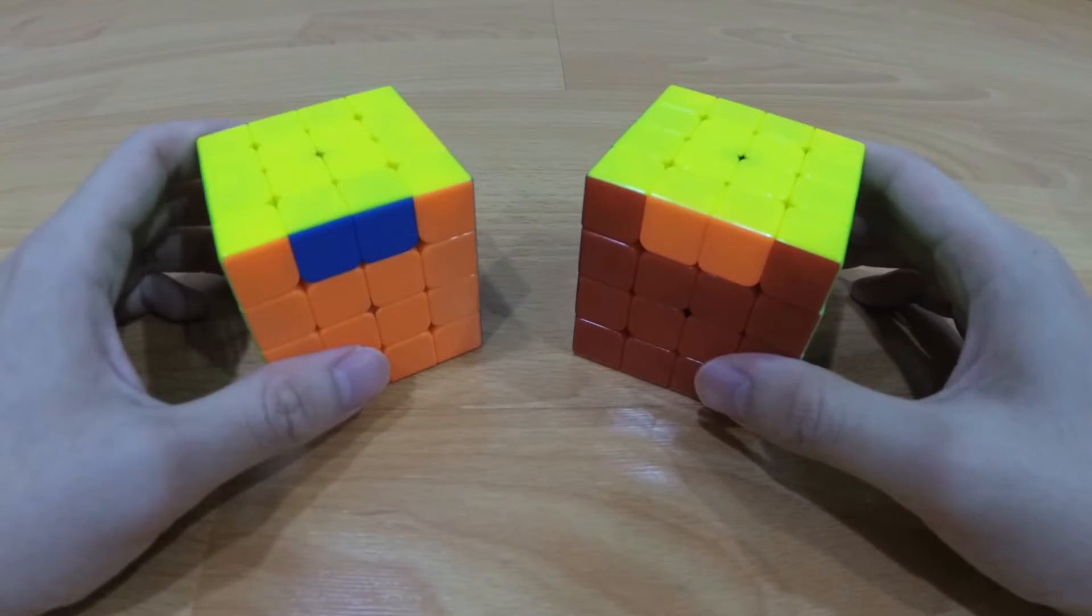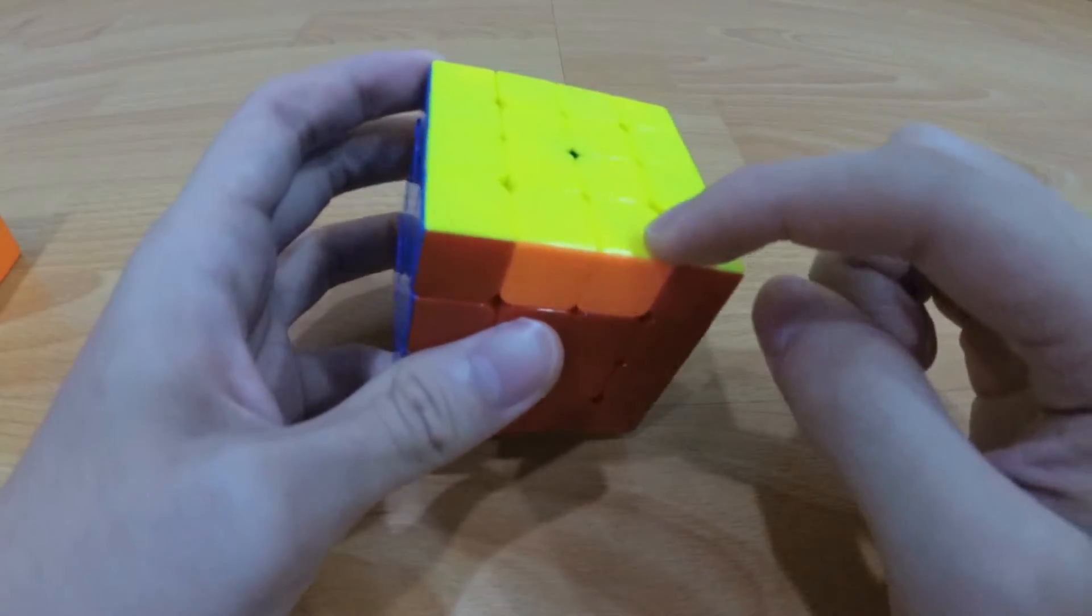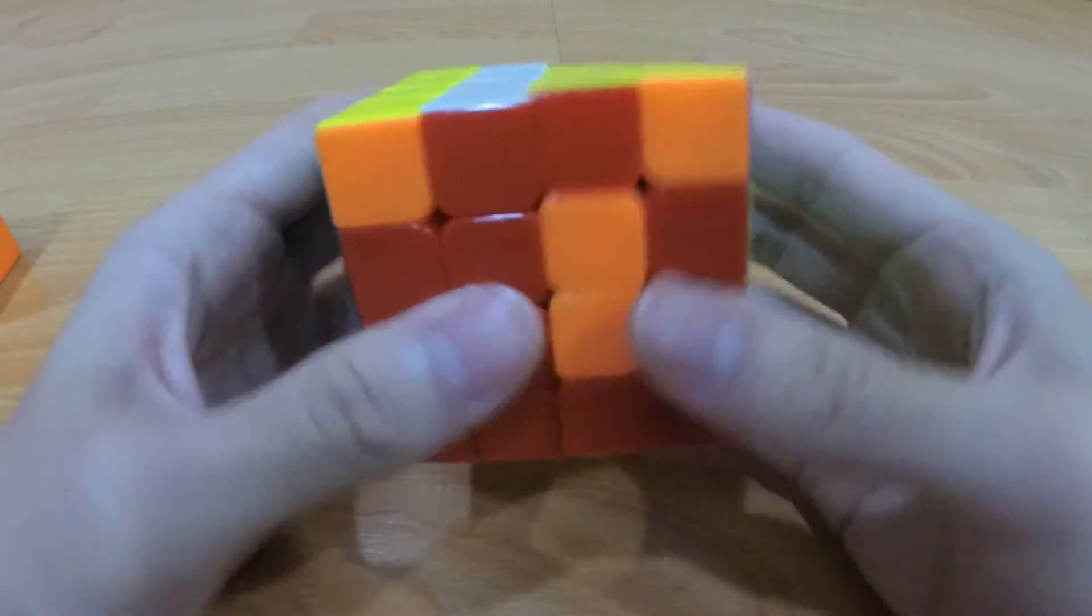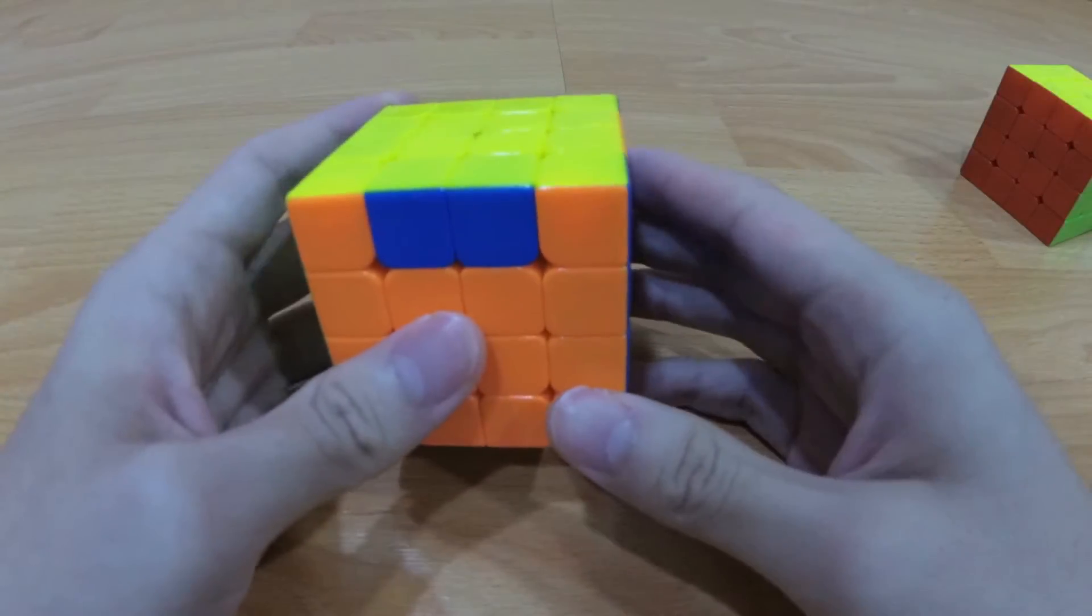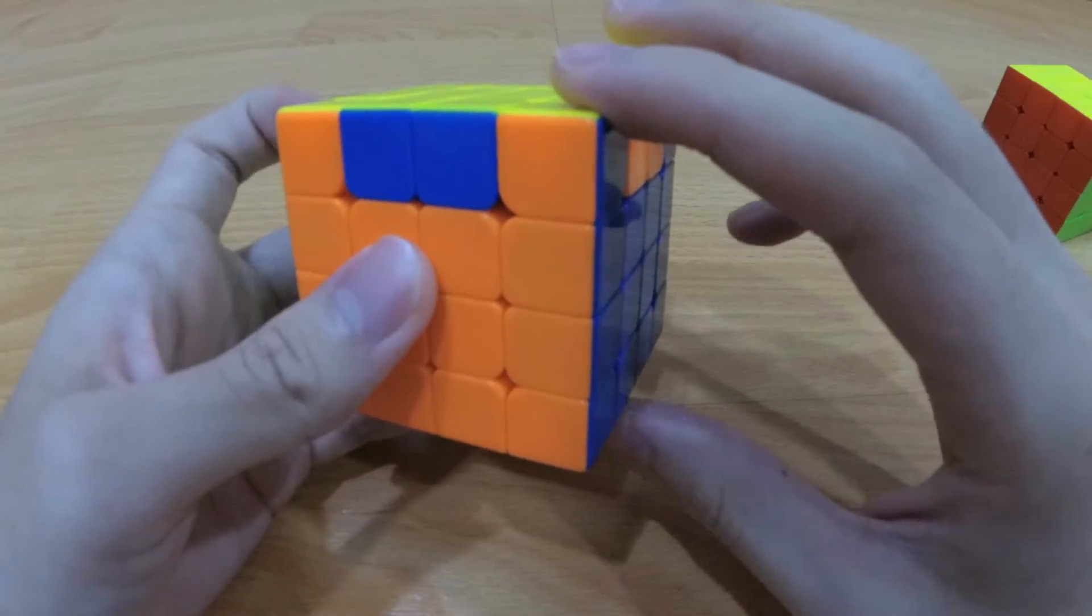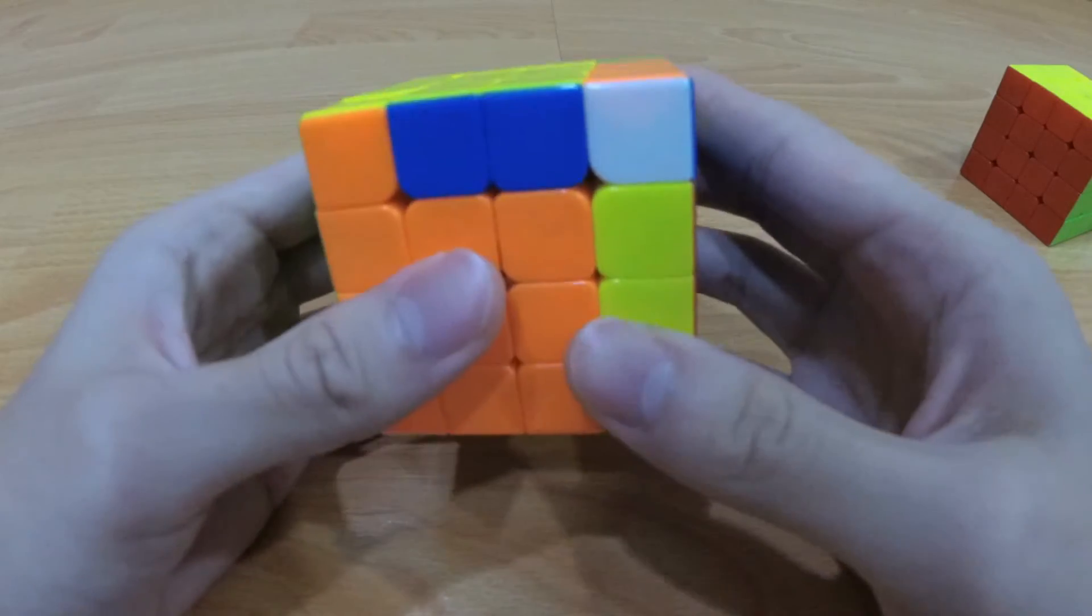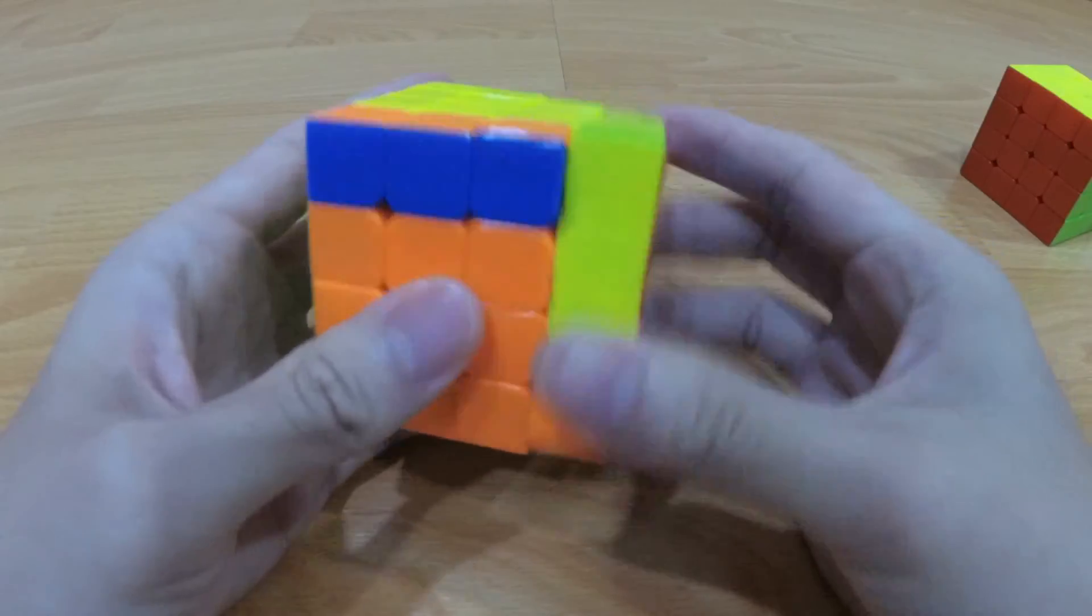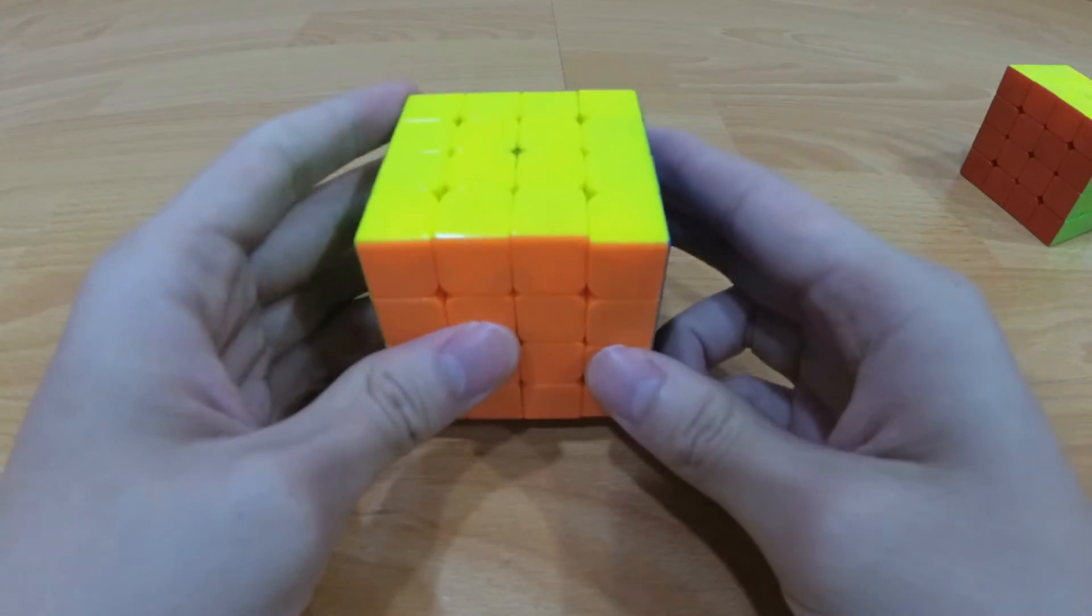So, here are the two types of PLL parities. So, this is opposite to each other. So, what you do is the basic one. And next, this is adjacent to each other. So, what you should do is do a R U R' U' and then the R U' R U' R'. It's solved.